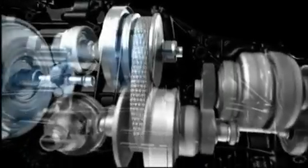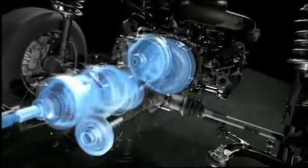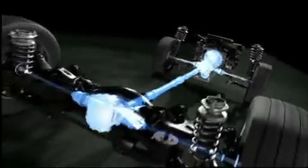Unlike other CVT transmissions, the forward and reverse clutches on the Subaru Lineartronic are positioned after the variable pulleys, which also helps protect the gearbox from the torque feedback from the wheels. Smoother gear changing.